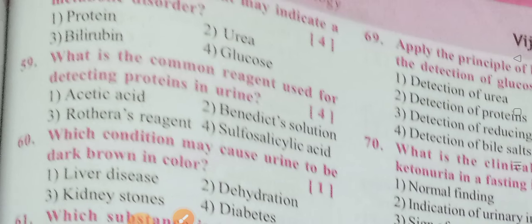What is the common reagent used for detecting proteins in urine? The options are: Acetic acid, Benedict solution, Rothera's reagent, Salicylic acid. Option 4 is the correct answer — Salicylic acid.